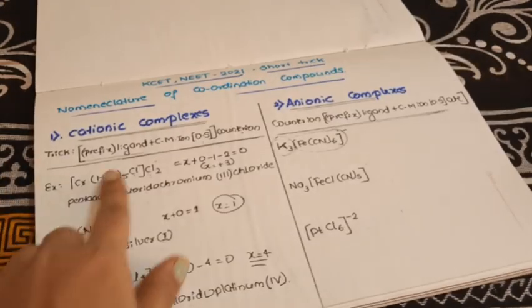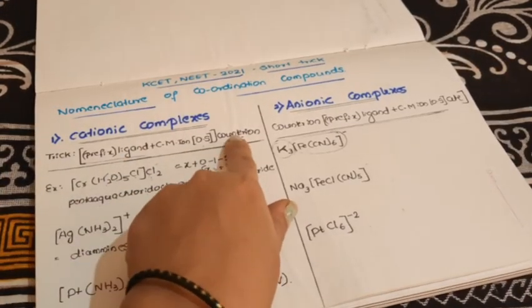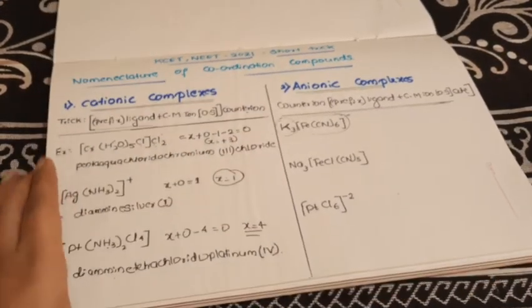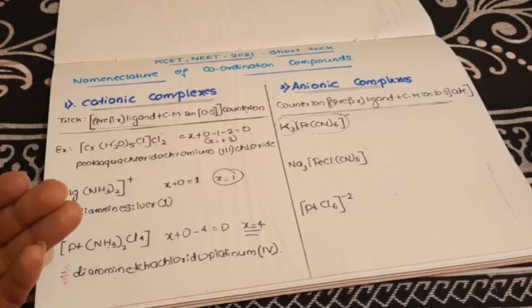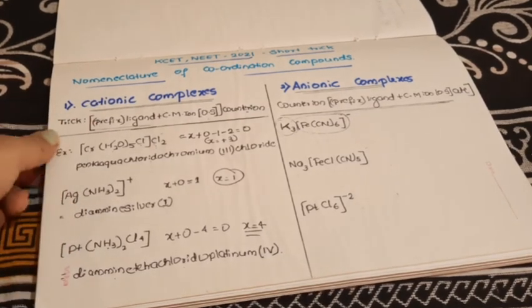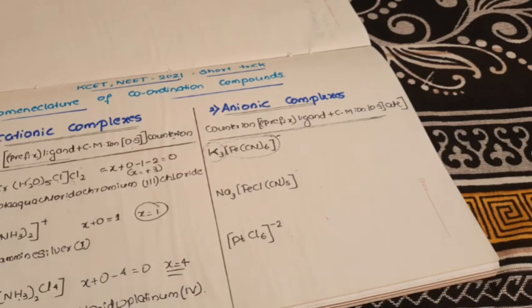Remember this simple trick and apply it. If you solve at least 10 examples from each type of complex, you can answer very easily. This was for the cationic complex. In my next video, I will give the rules to nomenclate the anionic complex.